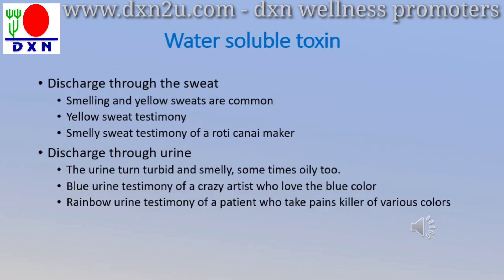Then another even funnier case — rainbow urine. When he took the product, first the urine was reddish, then orange, then yellow, then green, then blue — all colors of the rainbow came out one by one. He asked what happened. I found out he had been taking different colored painkiller tablets from various pharmacies for joint pain for the past 16 years, and the colors were being discharged through his urine. After taking Ganoderma, he became much better and his joint problem was solved.